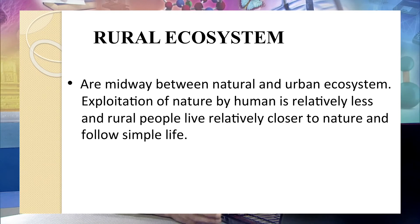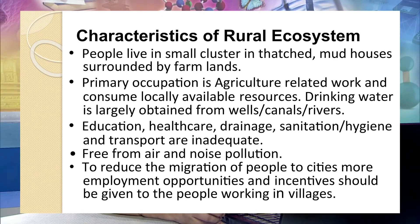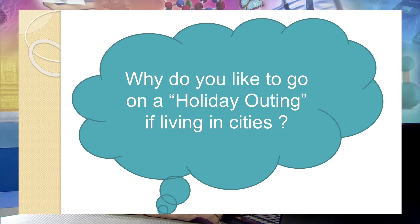Next is the rural ecosystem. Rural ecosystems are the midway between natural and urban ecosystems. Exploitation of nature by humans is relatively less, and rural people live relatively closer to nature and follow a simple life. People live in small clusters in thatched and mud houses. Primary occupation is related to agriculture. Education, healthcare, drainage, and transport are inadequate — one of the reasons they tend to move to urban settlements. Rural areas are free from air and noise pollution, and to reduce migration of people to cities, more employment opportunities need to be generated in rural areas.